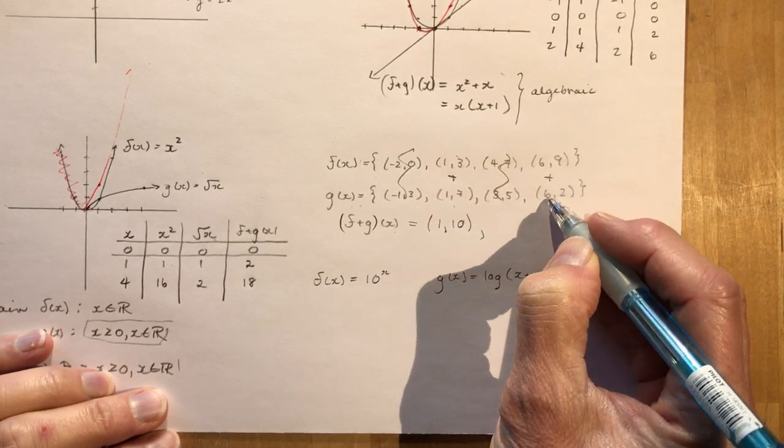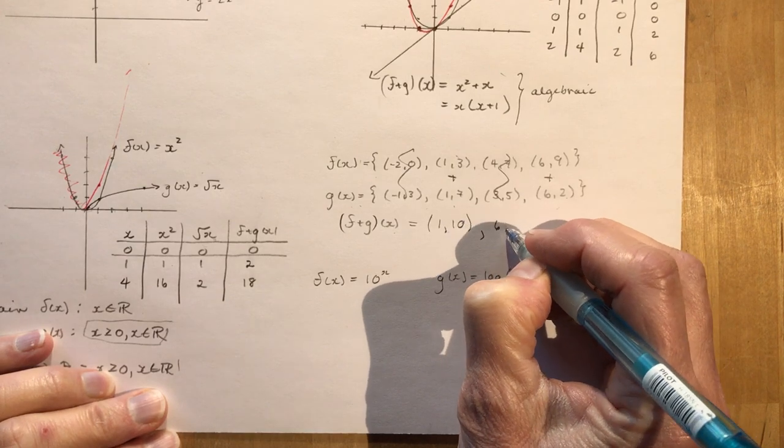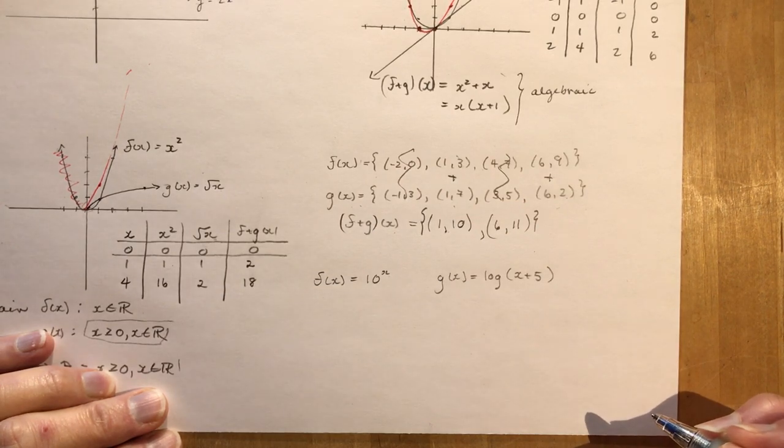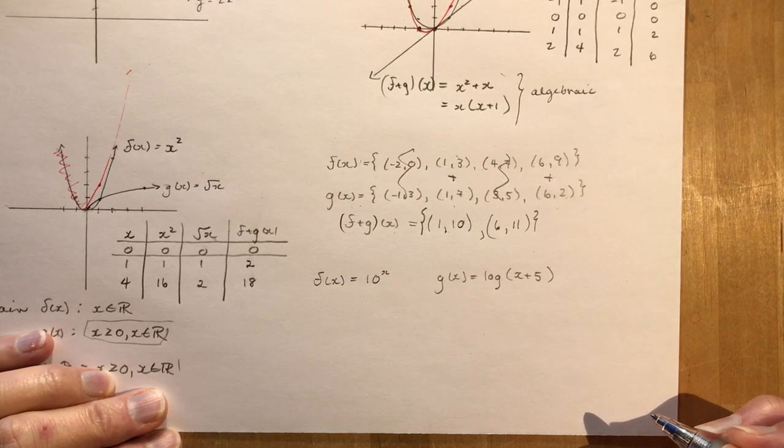And 6 and 9, 6 and 2 will go to 6, 11. And there you go. There's your combination. You added f at x and g at x.